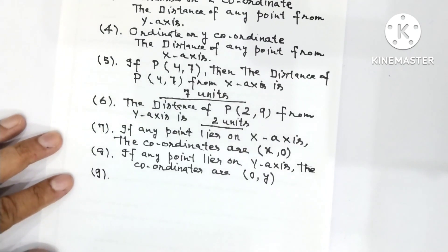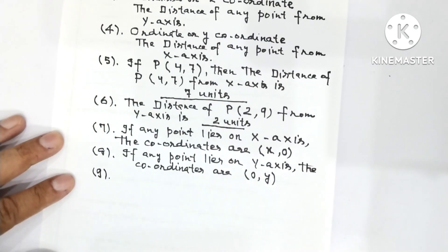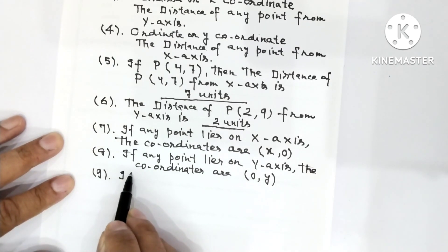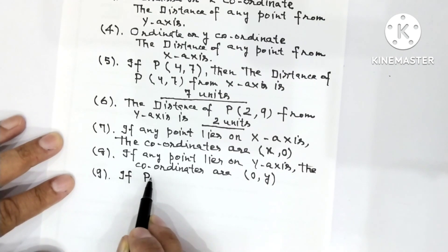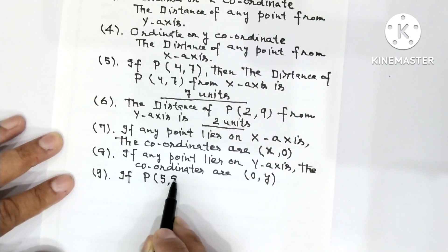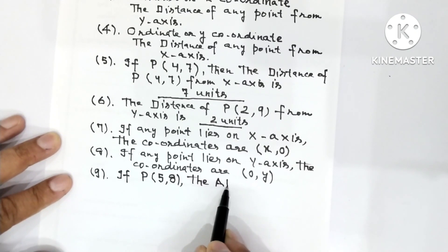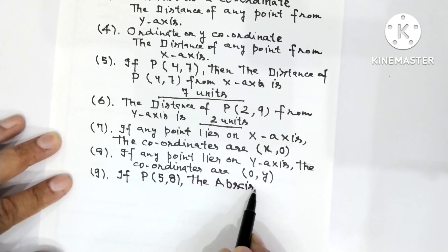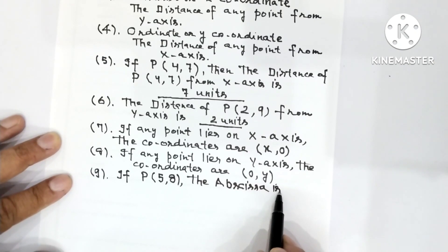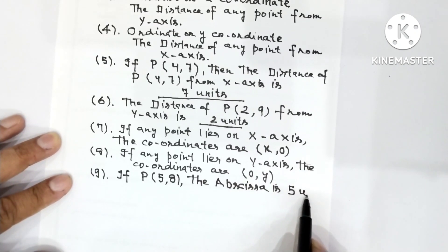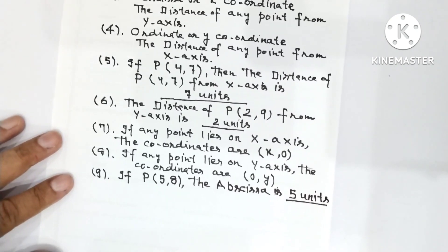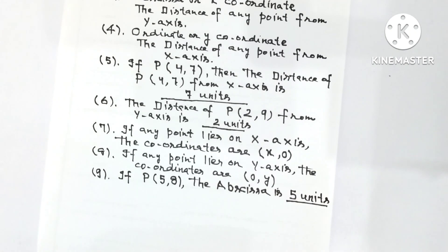Question number nine: if P has coordinates (5, 8), the abscissa is? This question is asked directly — the abscissa is 5 units. And if the ordinate is asked, you would write 8 units.